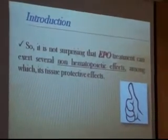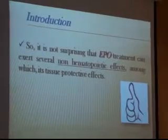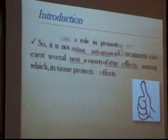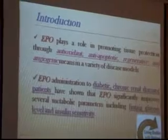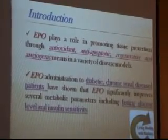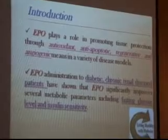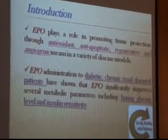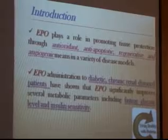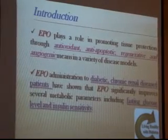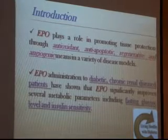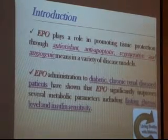It is not surprising that erythropoietin treatment can exert several non-hematopoietic effects, among which is a tissue protective effect. Erythropoietin plays a role in promoting tissue protection through antioxidant, anti-apoptotic, regenerative and angiogenic means in a variety of disease models. Administration to diabetic chronic renal disease patients has shown that erythropoietin significantly improves several metabolic parameters including fasting glucose level and insulin sensitivity.